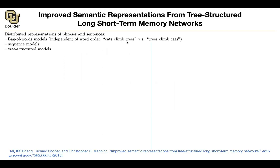For instance, 'cats climb trees' is going to give you the same representation as 'trees climb cats.' One of them has meaning; the other doesn't. We learned about sequence models — CNNs can actually be thought of as sequence models. We also learned about tree-structured models like recursive neural networks. CNNs and RNNs are sequence models. We're going to learn another sequence model later on, which is about attention, and then tree-structured models.